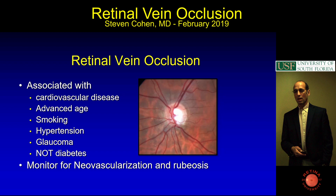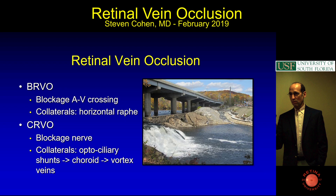Branch vein occlusion is a blockage at the AV crossing and the collaterals go across the horizontal raphe. Central vein occlusion is a blockage at the nerve and the collaterals end up going all the way through to the vortex veins. You get an optociliary shunt that goes through to the choroidal vessels and out the vortex veins.